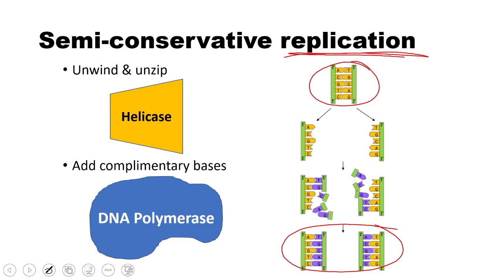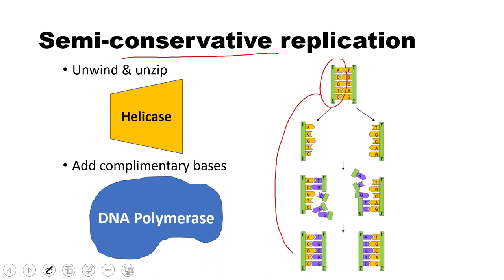What do we mean by semi-conservative? Well, we did the replication. Conservative means we conserved one strand. This original strand is conserved, it's kept down here. And this strand is conserved on the other one over here.